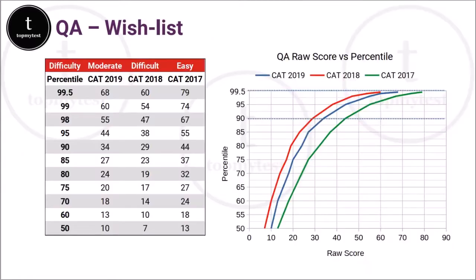Let's begin. If you were to roughly break it down in terms of marks versus percentile across the last three CATs, the question paper is publicly available online. We have put out solutions for the QA and LRDI sections on our YouTube videos. This is the raw score versus percentile for the last three CATs in the QA section — it's been all over the place. We had a very difficult CAT in 2018, a very easy CAT in 2017, and a moderate CAT in 2019. The score required at 99.5 percentile is roughly double the score required at 90 percentile.